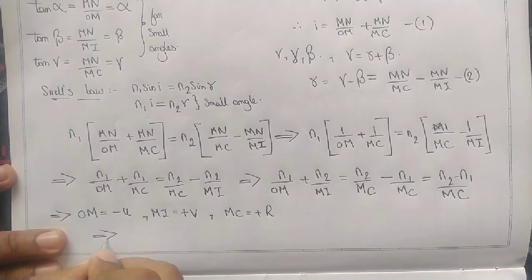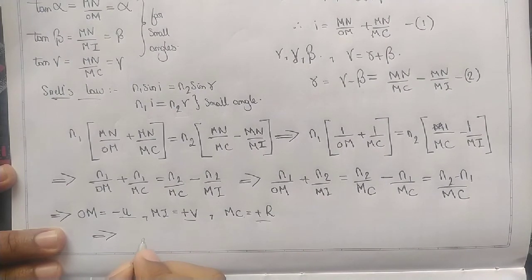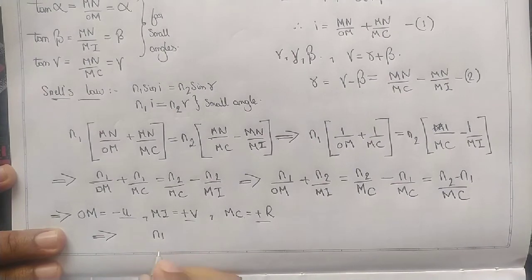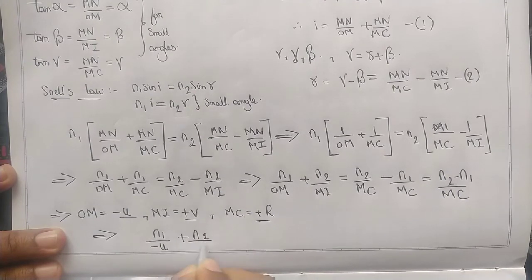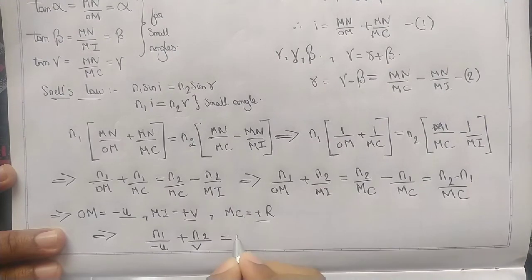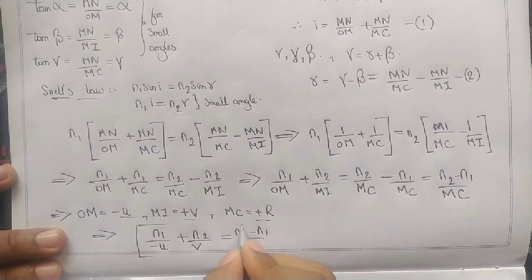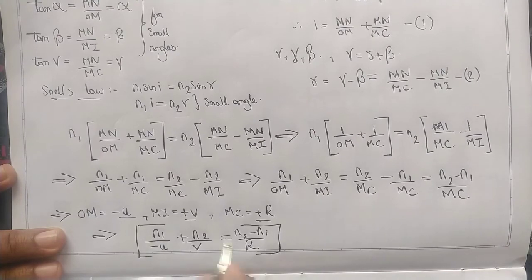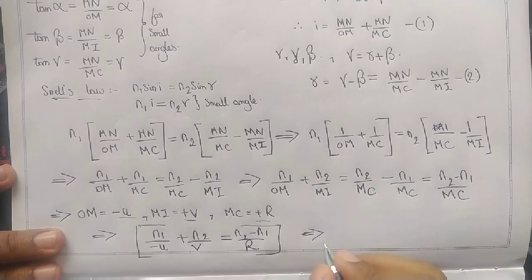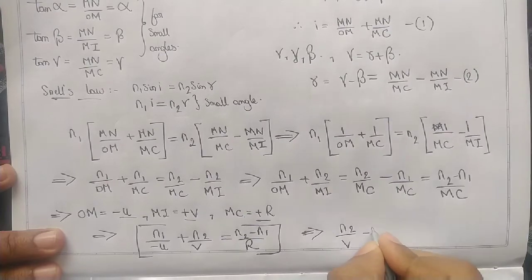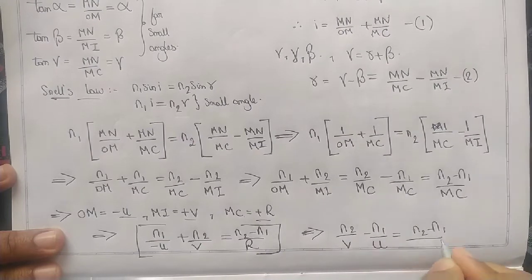The last thing: substitute these values in this equation. N1 by minus U plus N2 divided by plus V equals N2 minus N1 divided by R. We got the derivation. On modifying this, we get N2 by V minus N1 by U equals N2 minus N1 by R. We got our final equation.